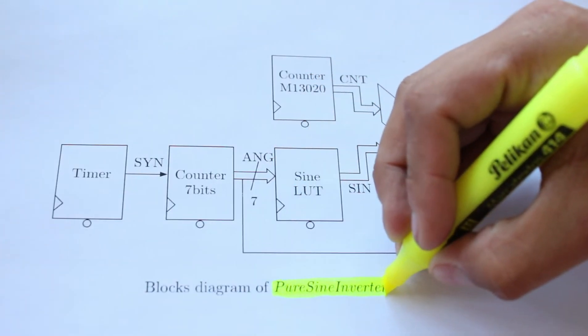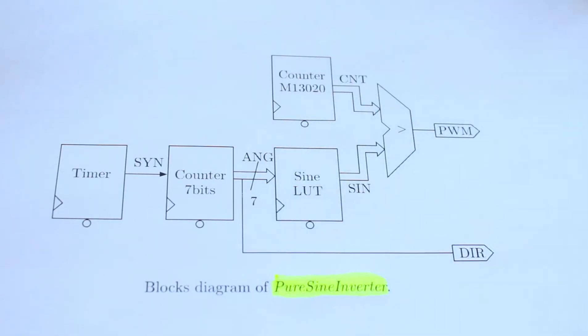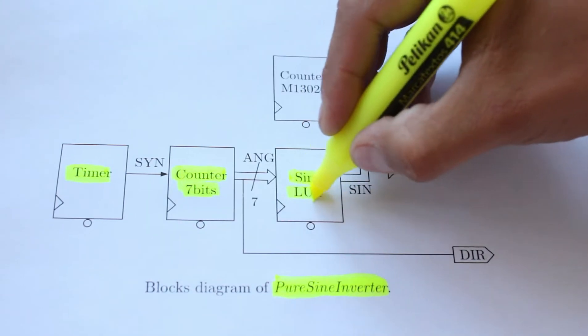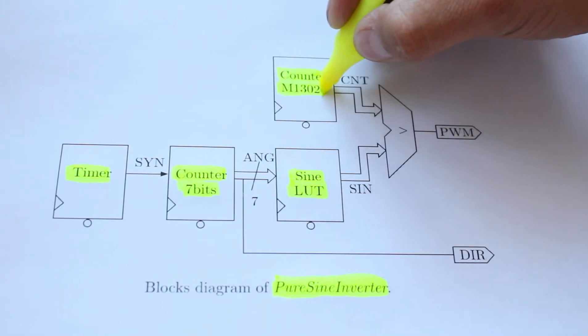Now, it's time for the hardware description. A block diagram of the pure sine inverter is like this. I use a timer, a generic counter, a sine lookup table, a special purpose counter and a converter.